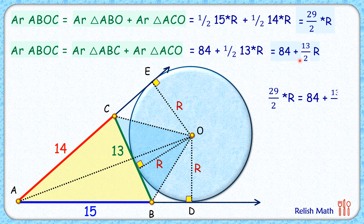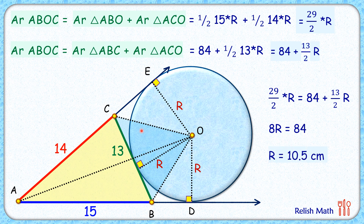Since both expressions represent the same quadrilateral, we equate them: 84 plus 13R/2 equals 29R/2. Taking the R terms to one side, we get 8R equals 84, so R, the radius of the big circle, is 10.5 centimeters. That's our answer.